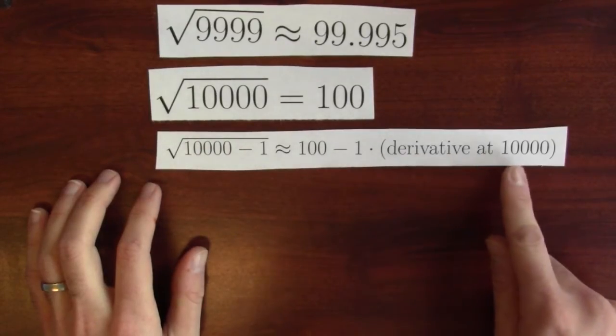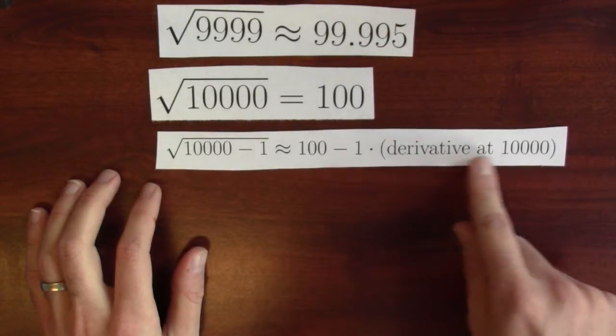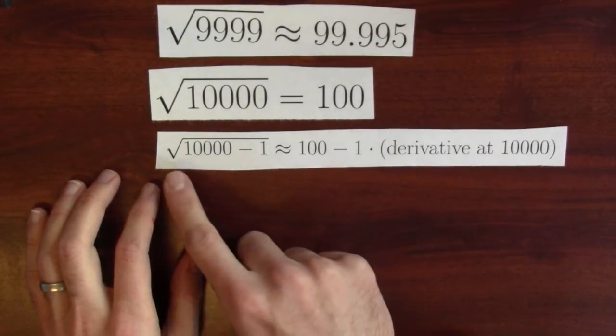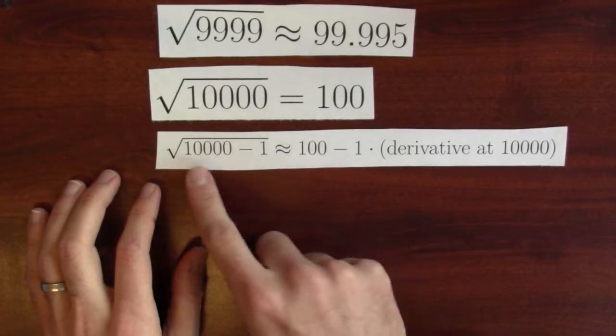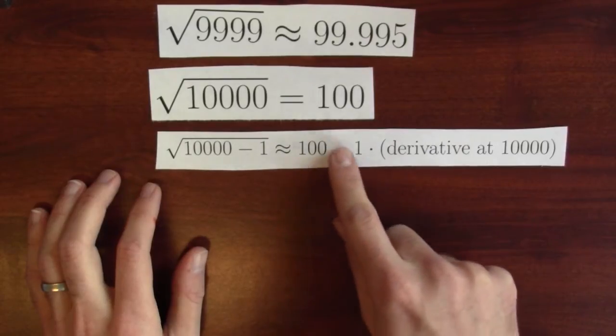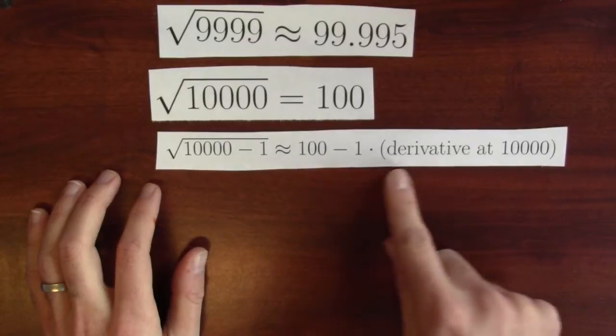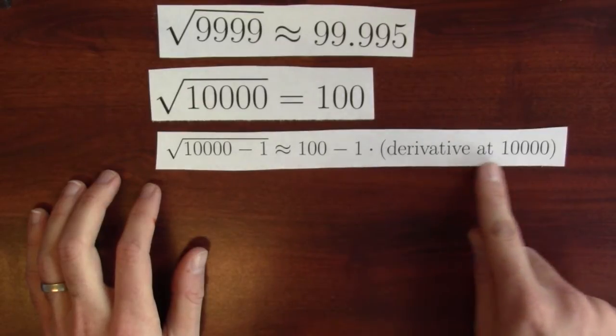Wiggling the input down a bit. What does the derivative calculate? The derivative calculates the ratio between output change to input change. So the square root of 10,000 wiggled down a little bit is about the square root of 10,000 minus how much I change the input by times the ratio of how much I expect the output change compared to the input change.